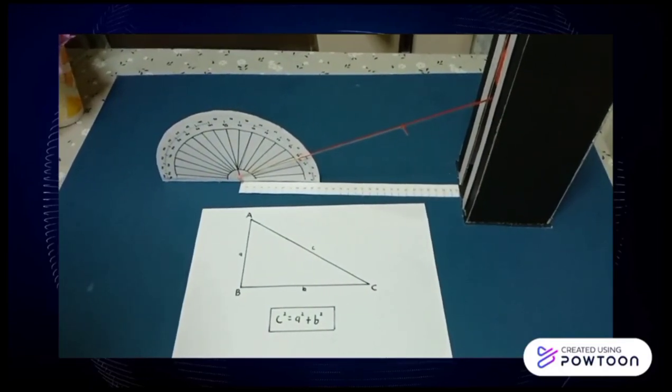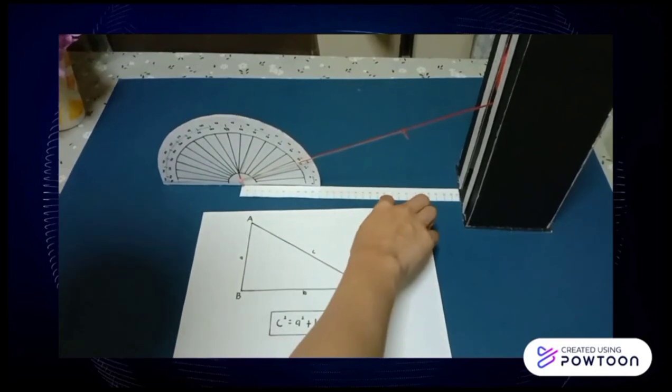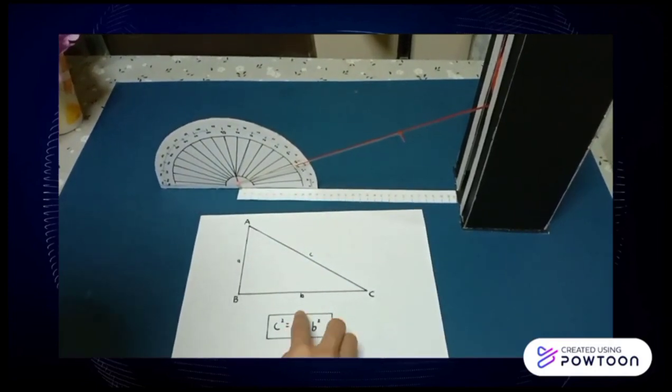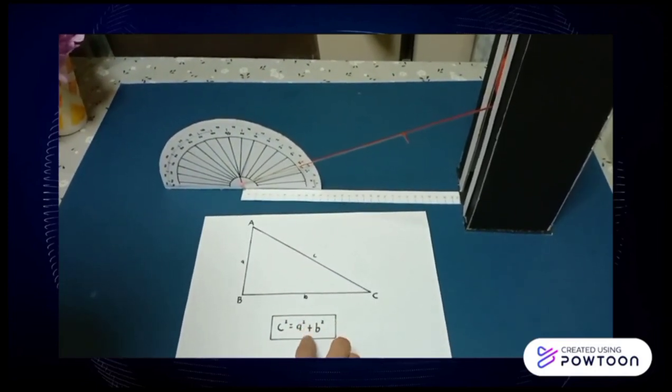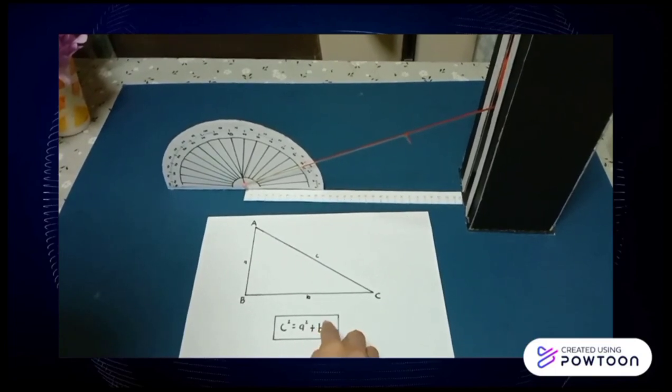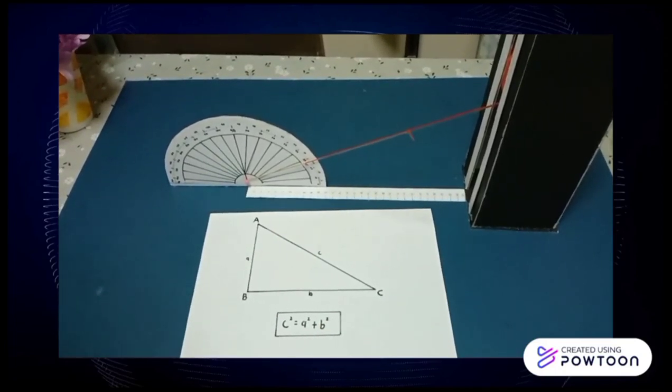After that, take the distance of the base and take the root of your A squared plus B squared. Finally, you can find your hypotenuse.